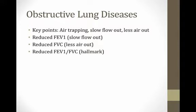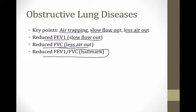In obstructive disease, you have air trapped inside the lungs because it can't get out. You also have slow flow of air going out and therefore less air going out in total. This means you're going to have a reduced forced expiratory volume in the first second because of that slow flow out due to obstruction. You also have a reduced forced vital capacity because there's less air that you're pushing out with each breath. The hallmark of obstructive disease is a reduced FEV1 to FVC ratio, because the FEV1 falls more than the FVC so that this ratio gets lower.